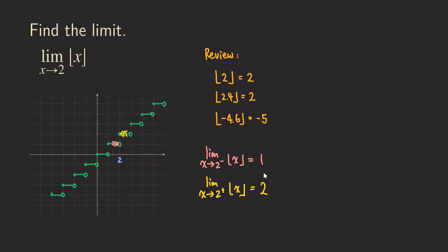You can see that those two one-sided limits are not the same. And that tells us that the limit as x approaching 2 of this function does not exist. And we're finished with this problem. Thank you.